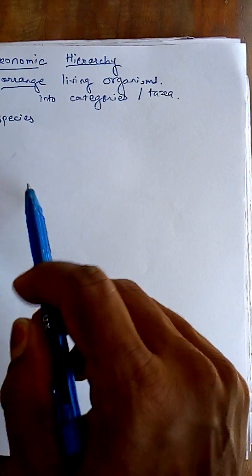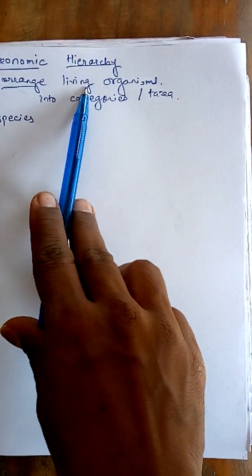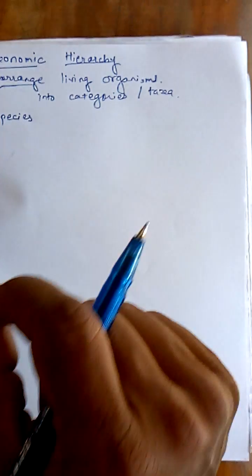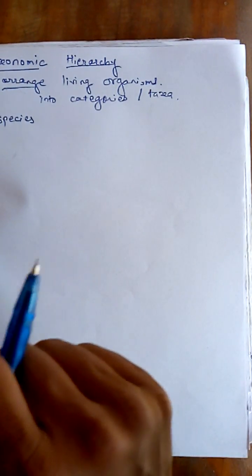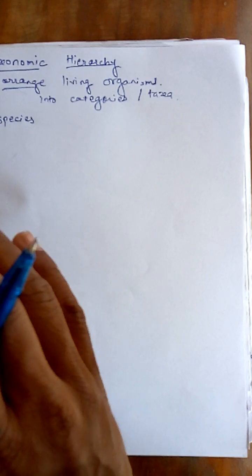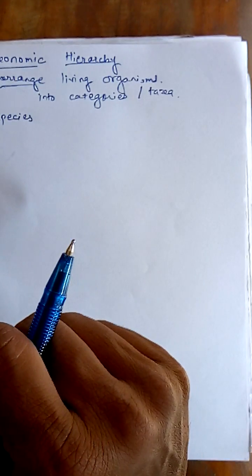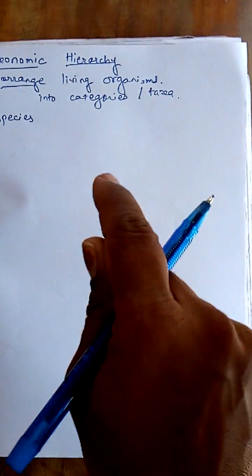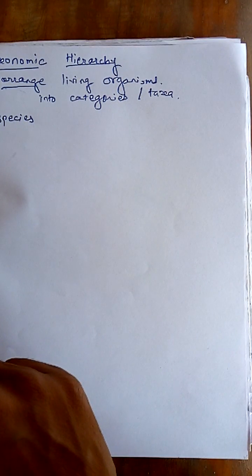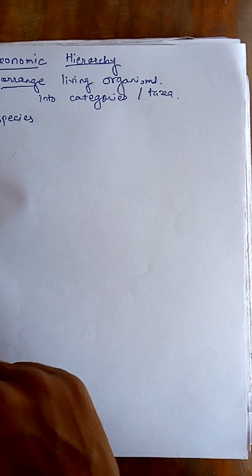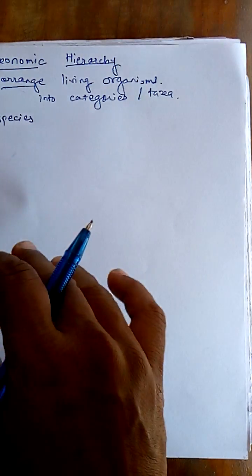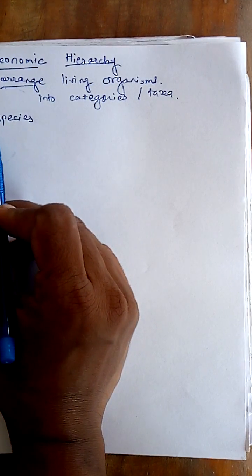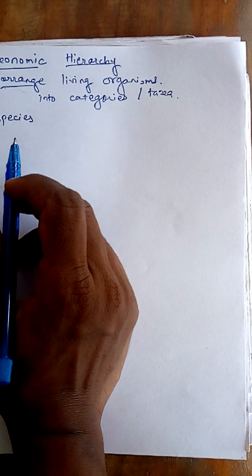We are going to arrange living organisms according to the presence or absence of certain characters into a particular level or category. If certain characters are present, we place them in that particular kingdom. So when we study characters on the basis of their presence or absence, we arrange them into either species, genus, family, etc. These are known as the ranks or categories.